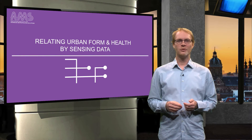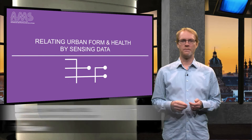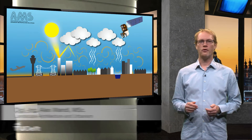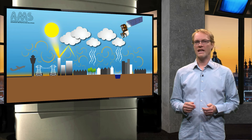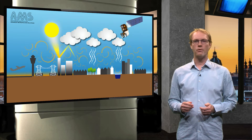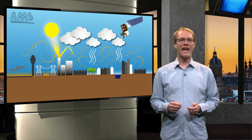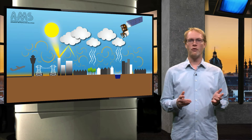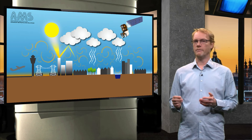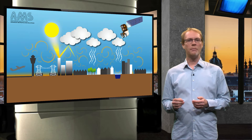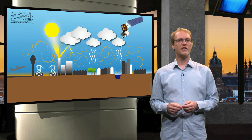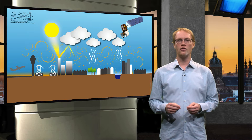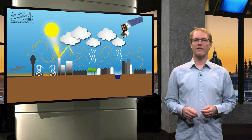Hello and welcome to this video. Today you are going to learn how different forms of sensing technologies and GIS-supported spatial analysis can help you to discover the relationship between urban form and livability. As an example, I will use the phenomenon of the urban heat island and its influence on human health and well-being.